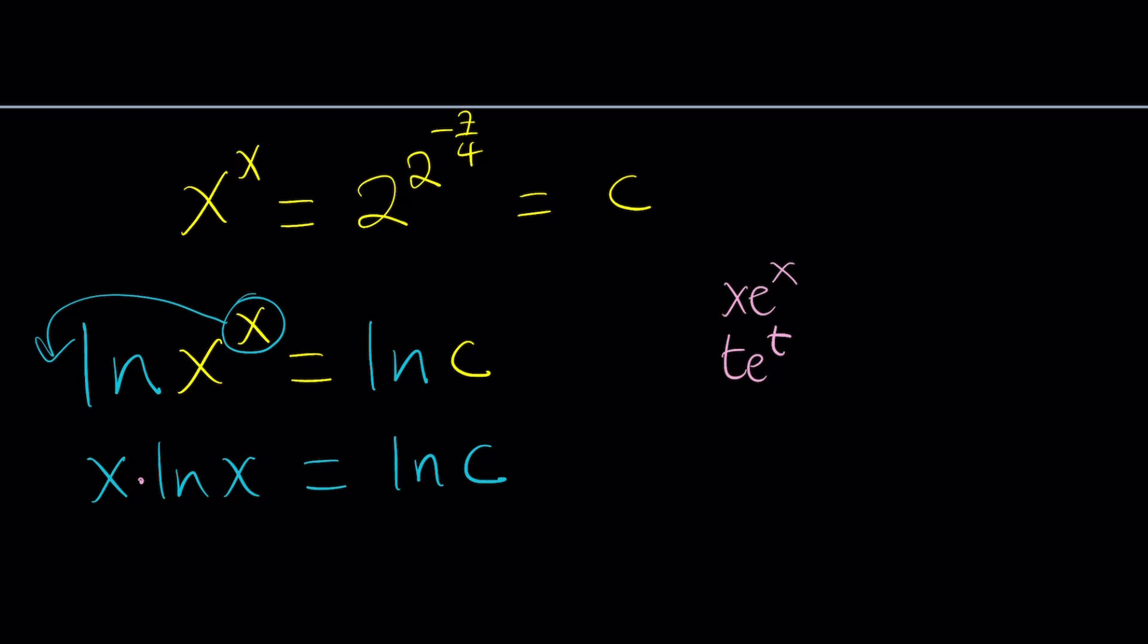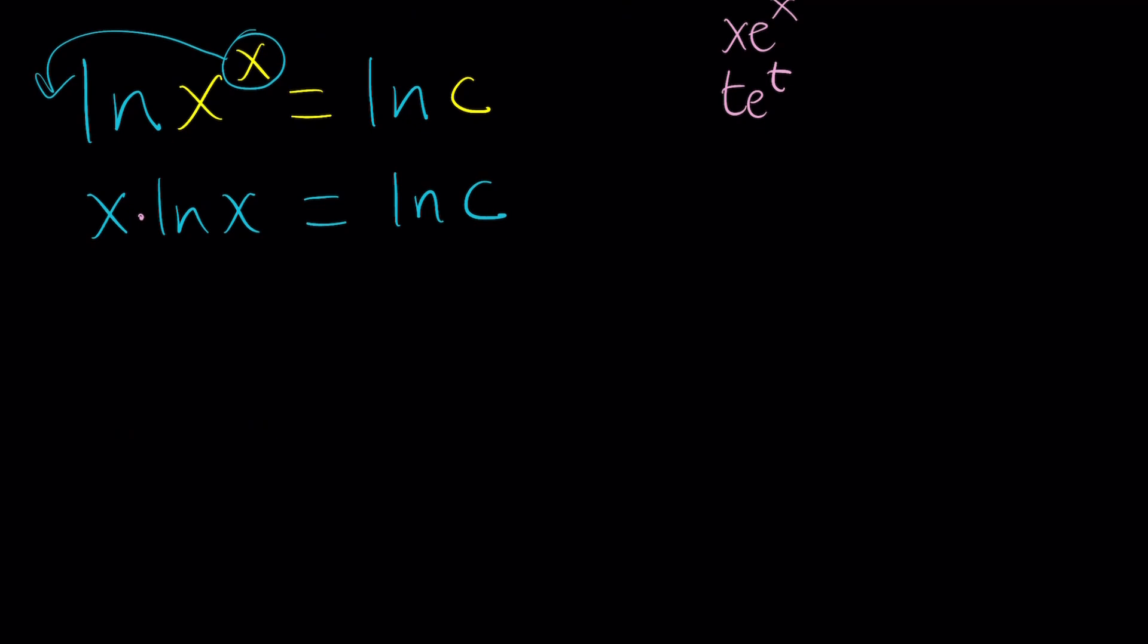You can just use substitution. Let's go ahead and replace ln x with t. Since the base is e, x is going to become e to the power t. So you can basically write this as t e to the t equals ln c and that's actually perfect from a Lambert's perspective.